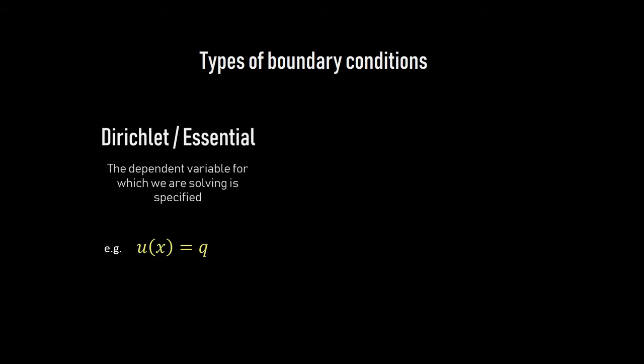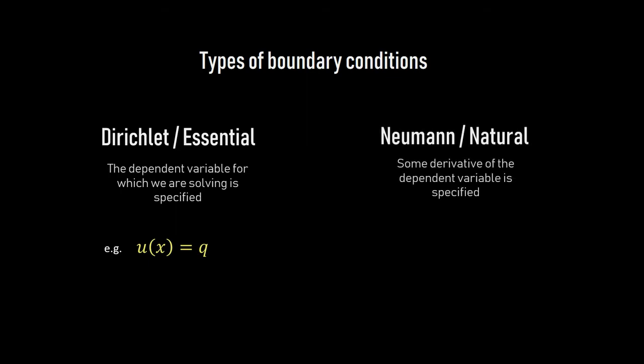The second type is the Neumann or natural boundary condition, where some kind of derivative — some kind of change of that variable — is specified. This is usually called a flux-type boundary condition. Note that these boundary conditions are specified on the boundaries of your domain. An example of a Neumann boundary condition involves an expression containing the derivative of your state variable, the function you want to find.